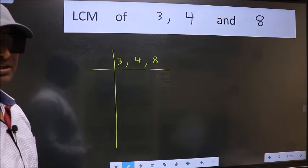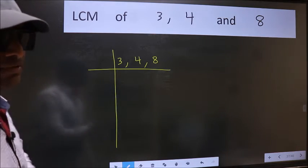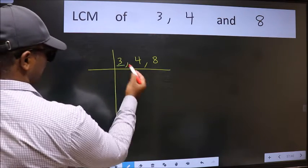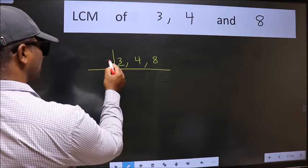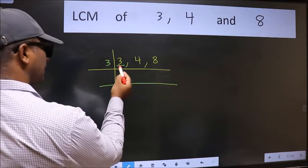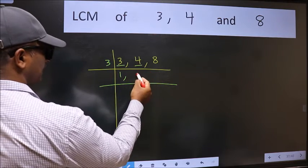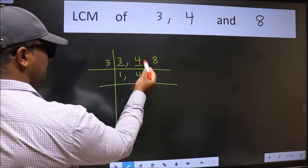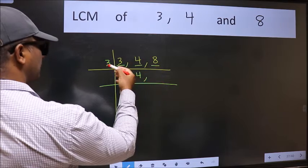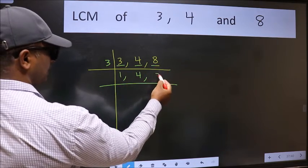Now we should focus on the first number which is 3 here. 3 is a prime number. So 3 1s 3. The other number 4 not divisible by 3. So we write it down as it is. The other number 8 not divisible by 3. So we write it down as it is.